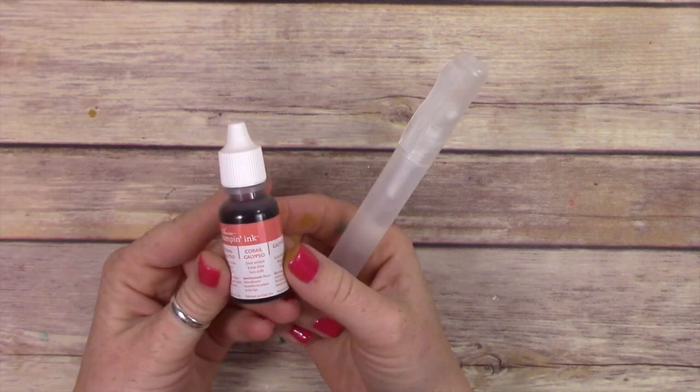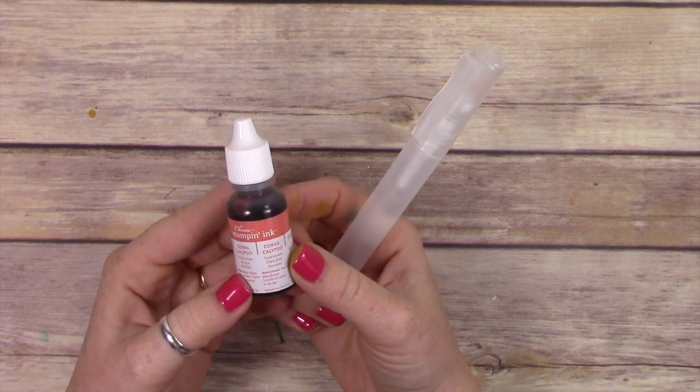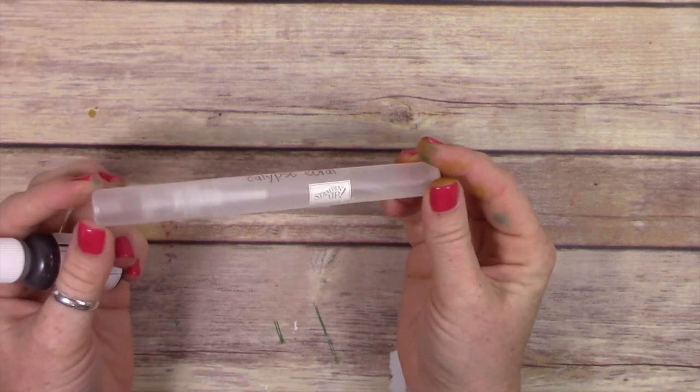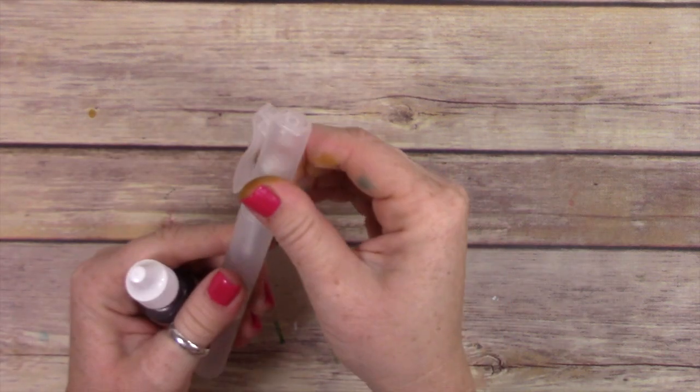Hey everybody, it's Wendy. We are going to make a mister really quick and I want to show you how to do that. All you need is a little Stampin' Up mister like this and I've written the name of the color I'm putting in it on the side.